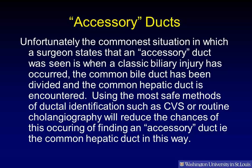Unfortunately, the commonest situation in which a surgeon states that an accessory duct was seen is when the classical biliary injury has occurred. The common bile duct has been divided and the common hepatic duct is encountered, which is then considered to be the accessory duct. Using the safest methods of ductal identification, such as CVS or routine cholangiography, will reduce the chances of this occurring — or of finding an accessory duct, that is, the common hepatic duct, in this way.